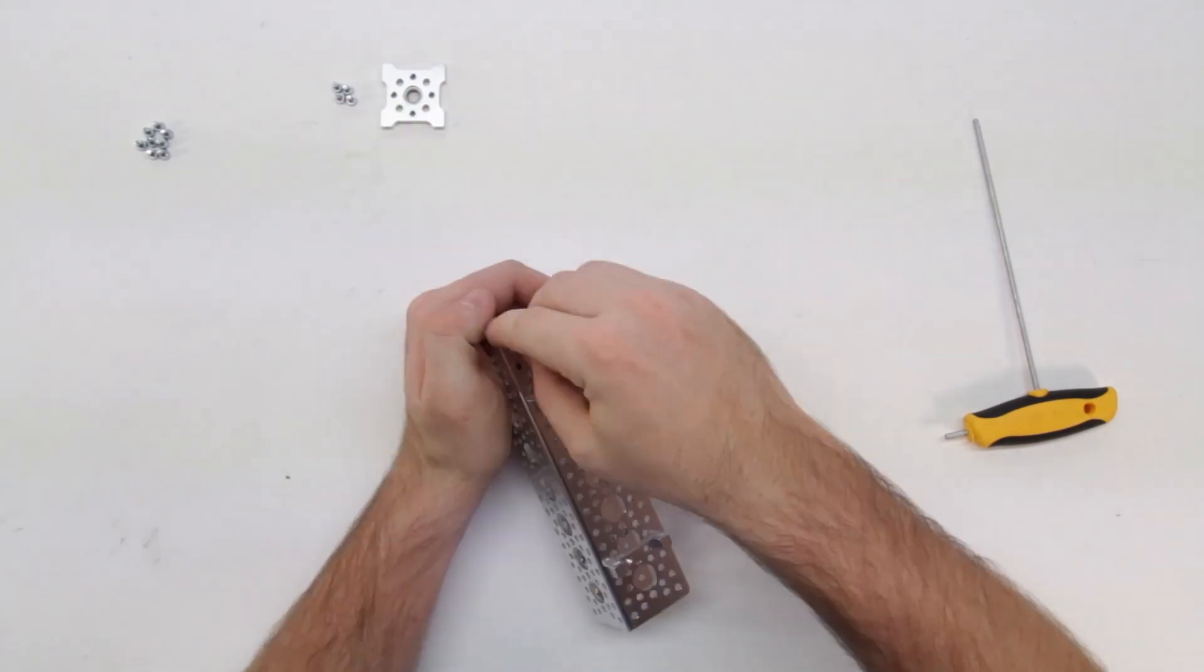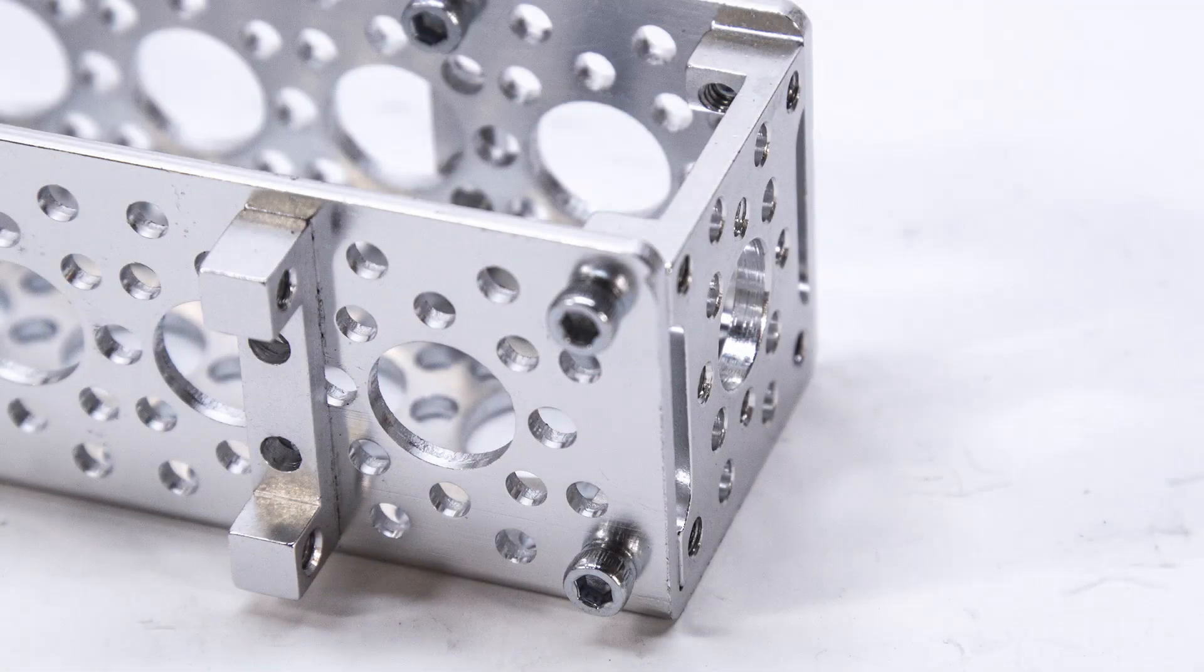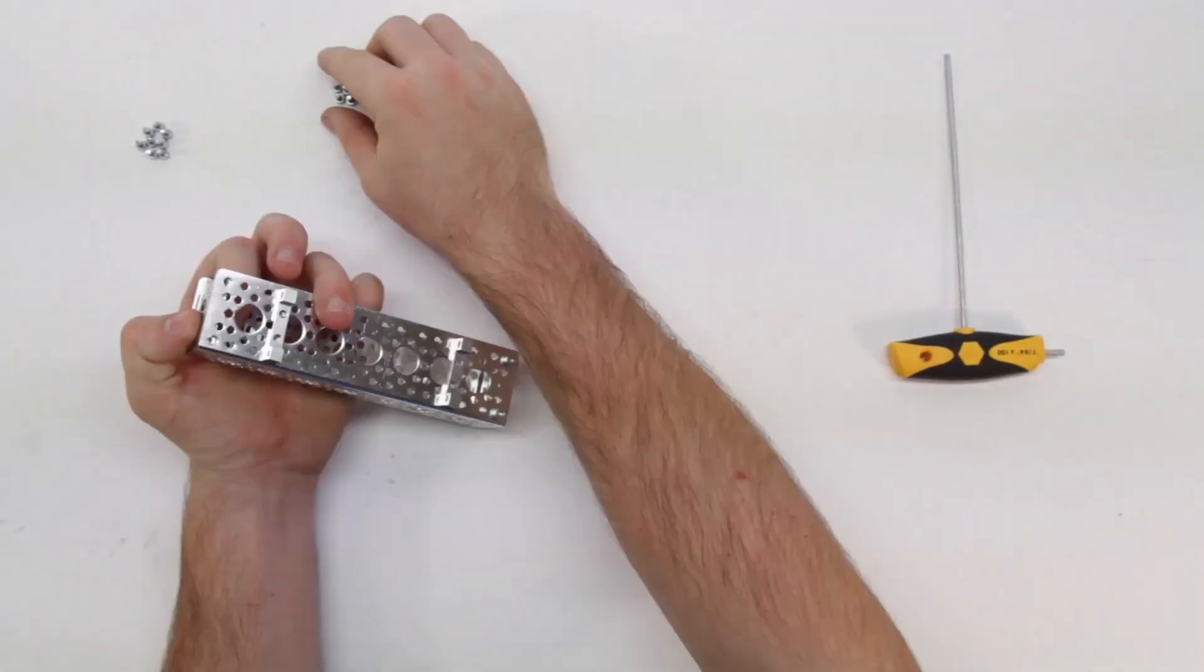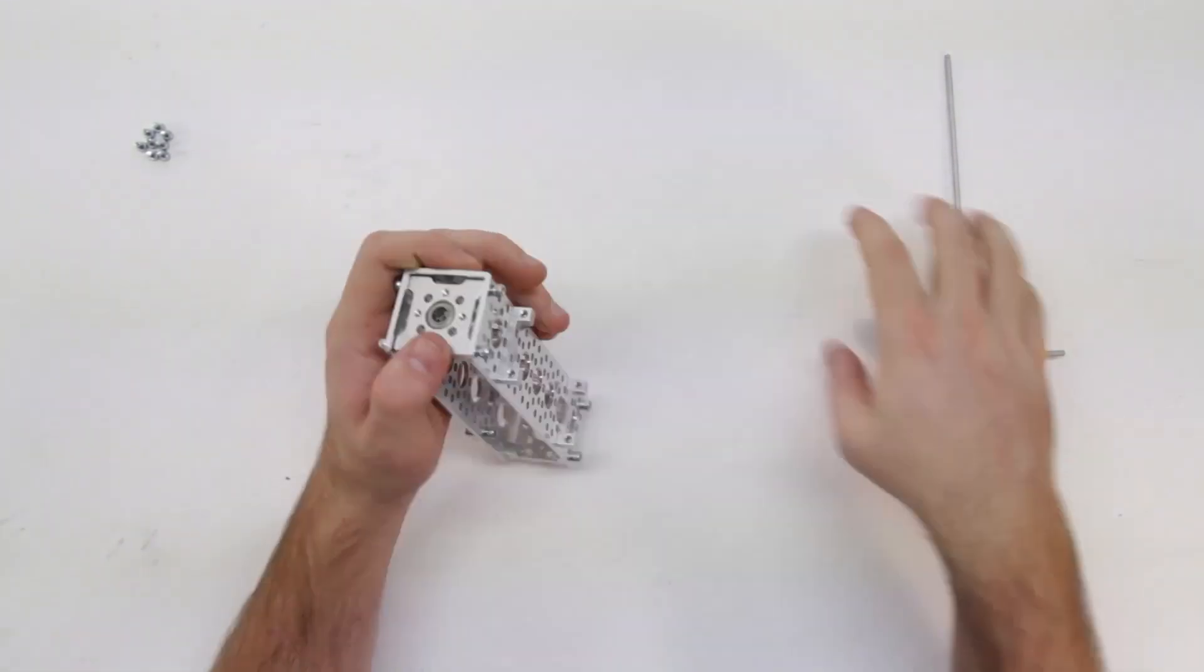Next, attach the quad hub mount to the end of the channel so that it sits flush with the edge. You will do the same with the quad pillow block on the other side of the channel.